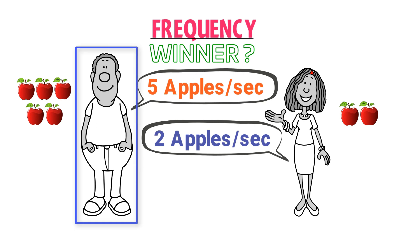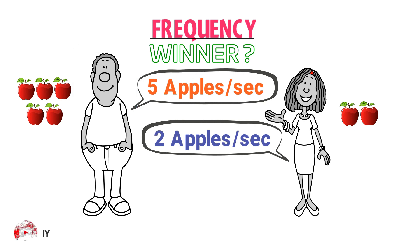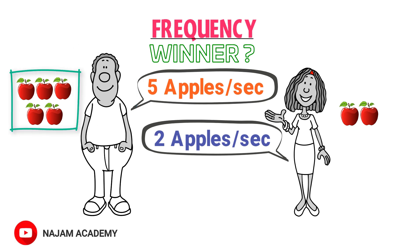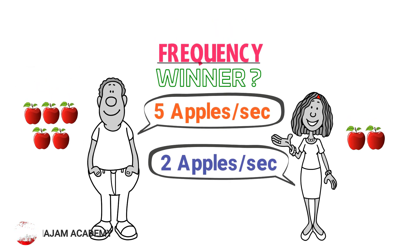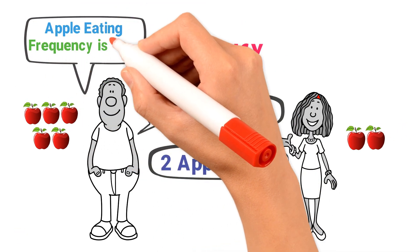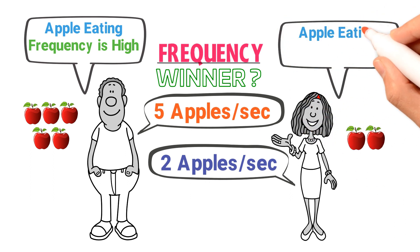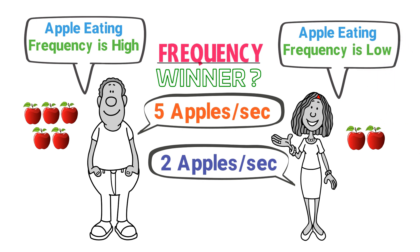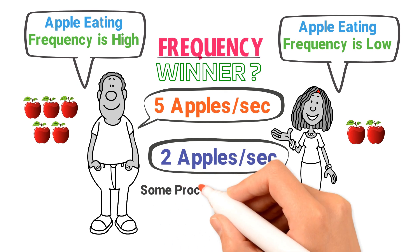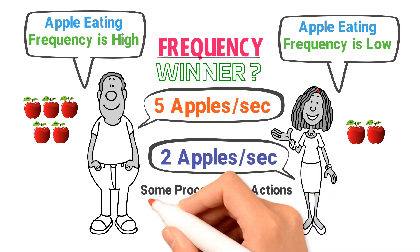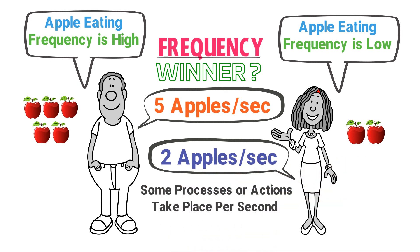Thus, the winner is John. John eats five apples per second, so his apple-eating frequency is high compared to Uzma. Uzma only eats two apples per second, so her apple-eating frequency is low compared to John. Remember that frequency is nothing but some process or action occurring per second.